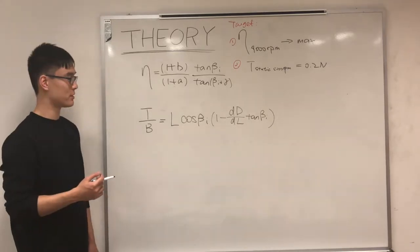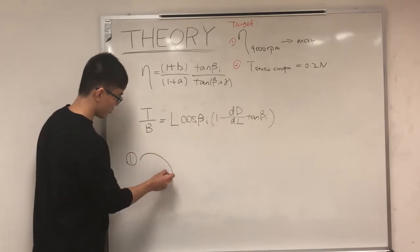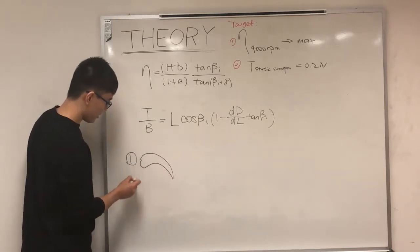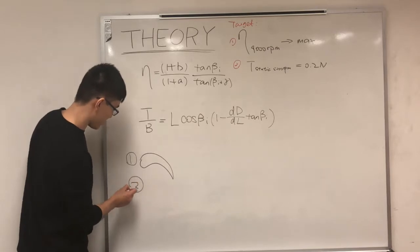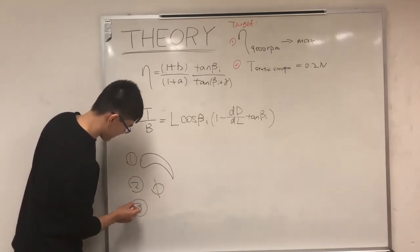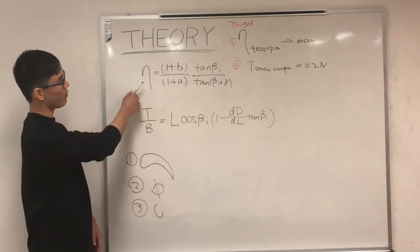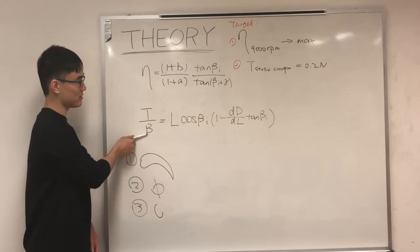There are three parameters we need to design for our propeller. The first is the cross-section geometry, which is the NACA airfoil shape. The second is the pitch angle, and the third is the chord length. With these three parameters defined, we can have our efficiency and thrust calculated.